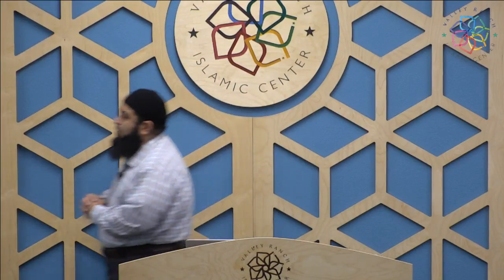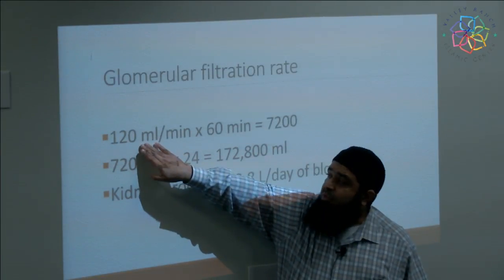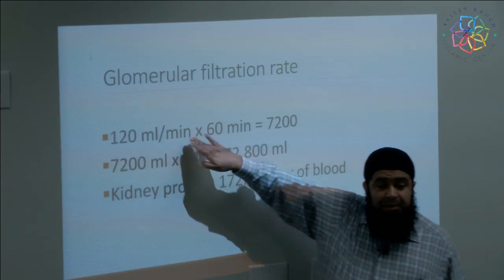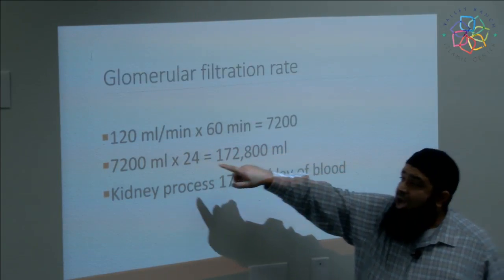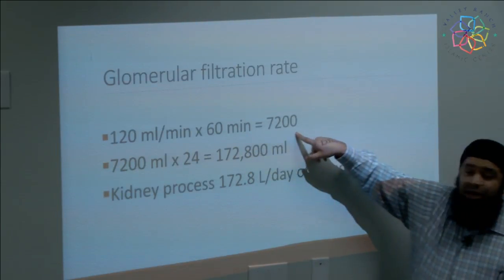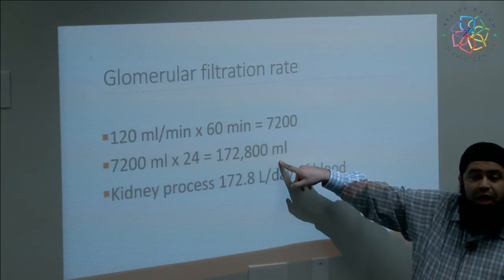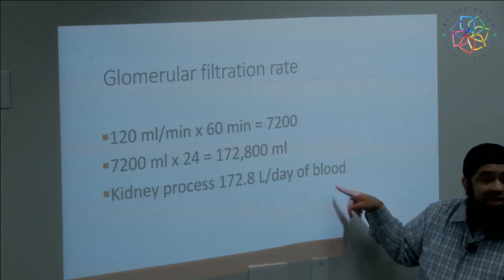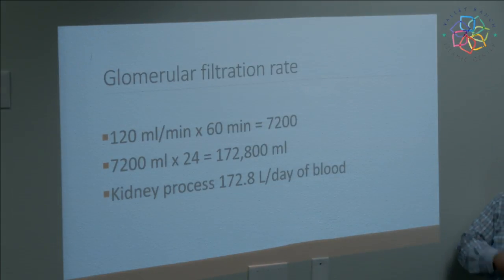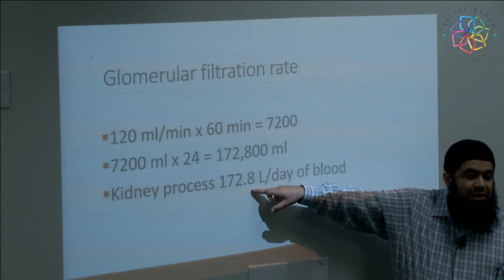A normal GFR for an individual is 120 mL per minute, meaning the kidney processes 120 mL of blood per minute. In 60 minutes that's 7,200 mL of blood. In 24 hours it processes 172,800 mL — that's 172 liters of blood per day being processed by the kidney. That's why it's a constantly working system. That's why people with chronic kidney disease really feel it — their kidney is not doing its job cleaning their blood, because it has to process this much blood to keep the body clean. And no machine made so far can do the same job.